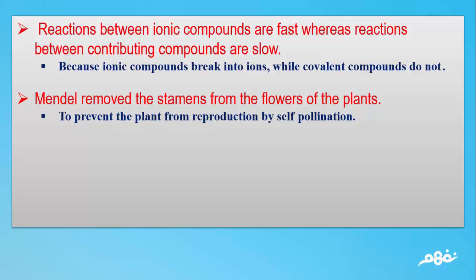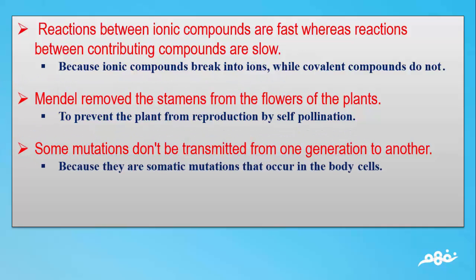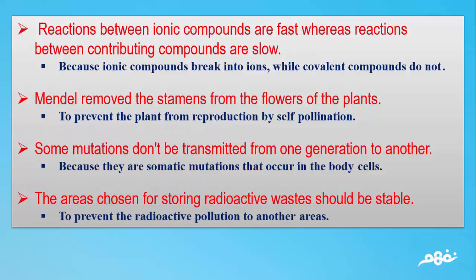Number 7: Some mutations don't be transmitted from one generation to another. The answer: Because they are somatic mutations that occur in the body cells. Number 8: The areas chosen for storing radioactive wastes should be stable. The answer: To prevent the radioactive pollution spreading to other areas.